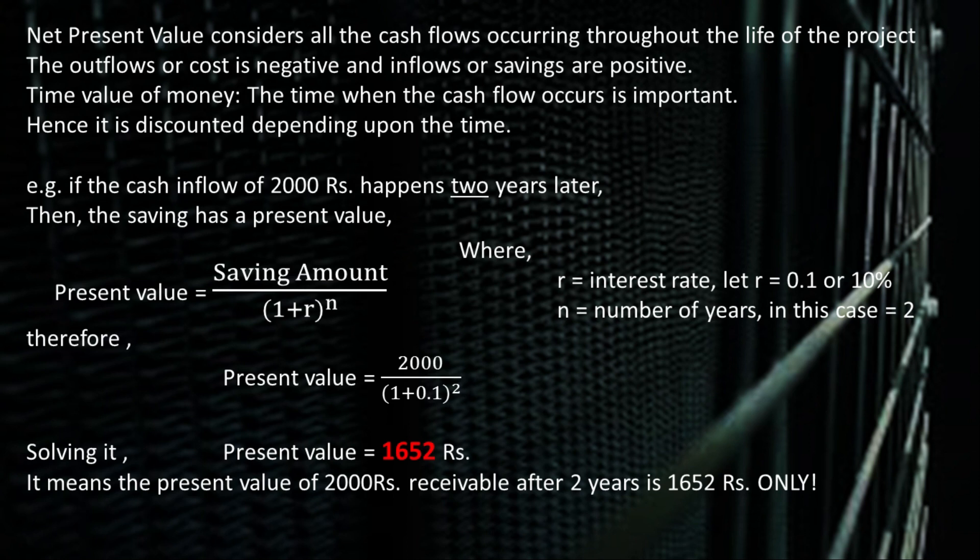The important point to be taken into account is the time — when the cash flows happen, it should be discounted depending on the time. For example, if a cash inflow of 2000 Rs. happens 2 years later, then the present value is equal to the saving amount divided by (1 + r) raised to n, where r is the interest rate and n is the number of years. In this case, n is 2.